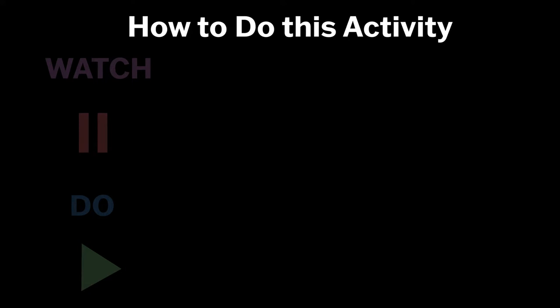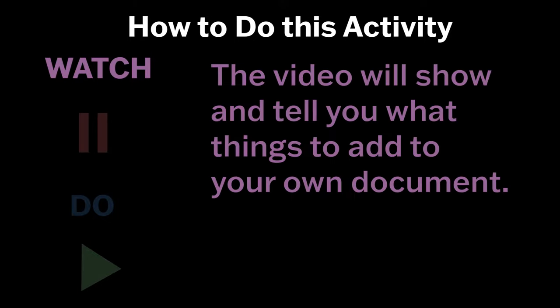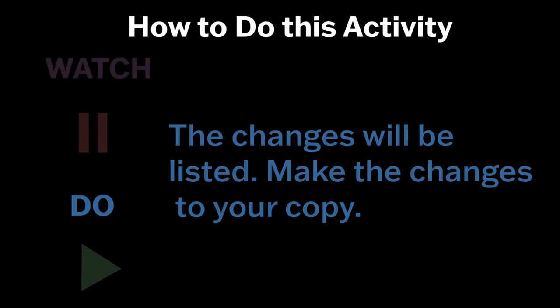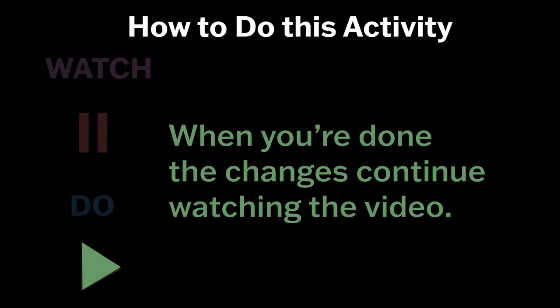Let's go over what you need to do for this activity. The video will explain some things and then show and tell you what things you need to add to your own document. Pause the video when you see the pause symbol. That screen will show the number of each item you need to add to your own document. Make the changes to your copy. Once you've finished making changes, hit play.